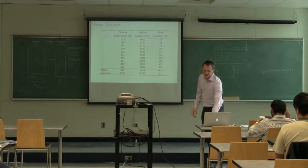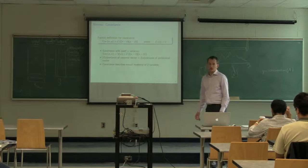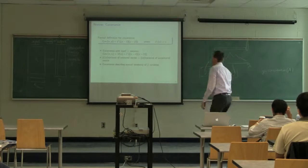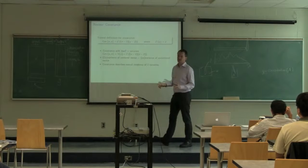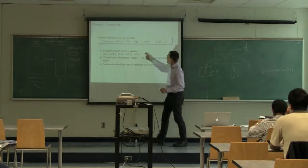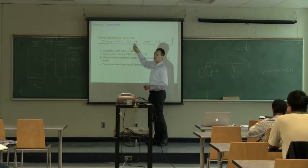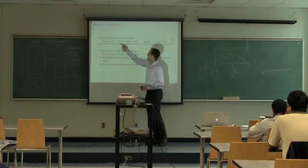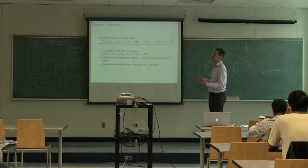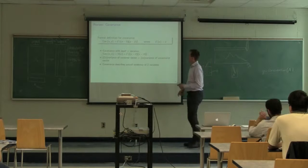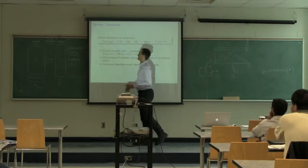If I wanted to calculate the covariance between temperature and pressure, I'd use this formula. The covariance between a variable X and a variable Y is defined as: take X subtracted from its mean, Y subtracted from its mean, calculate the product of that, and then take the expected value — the average. That gives you the covariance number between X and Y.